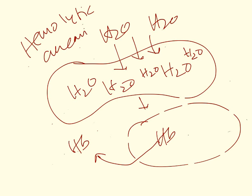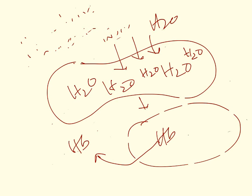Hemolytic anemia is one of the key signs seen in pyruvate kinase deficiency. In fact, pyruvate kinase deficiency is the most common cause of hemolytic anemia among all the enzyme deficiencies in glycolysis — it is the most common glycolytic enzyme deficiency leading to hemolytic anemia.